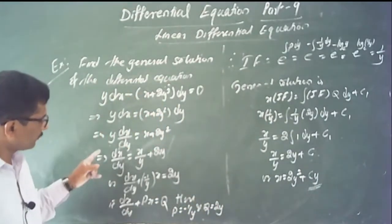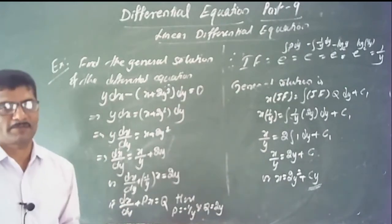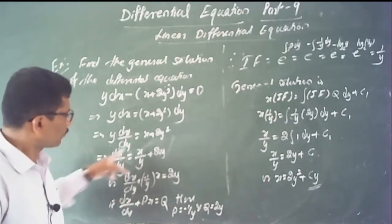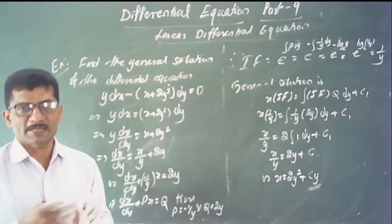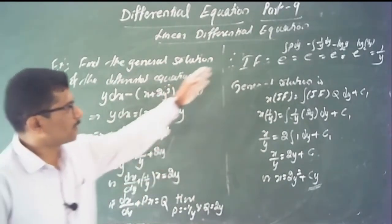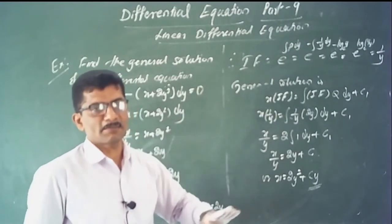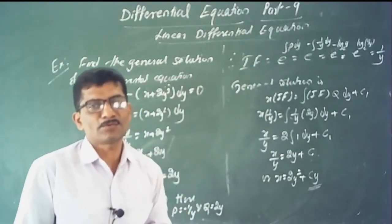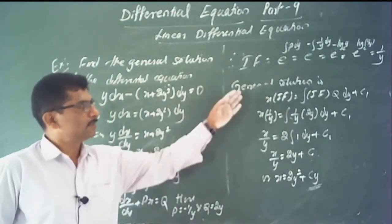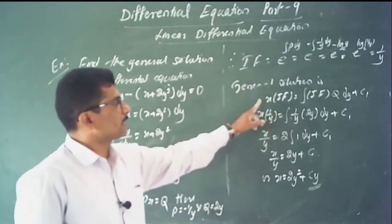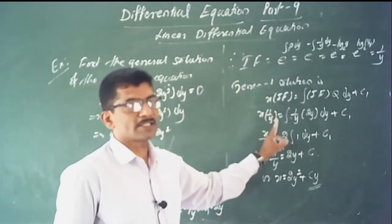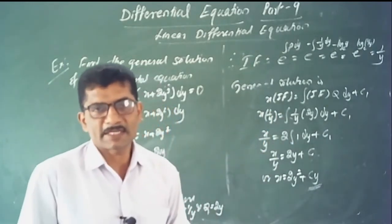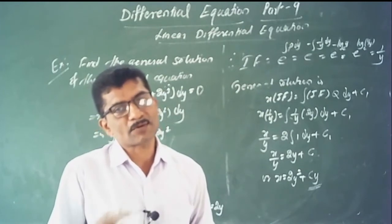Note: when solving using dx/dy form, the integrating factor is e to the power of the integral of p dy, and the general solution is x times the integrating factor equals the integral of the integrating factor times q with respect to y.